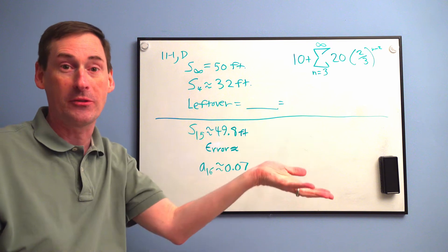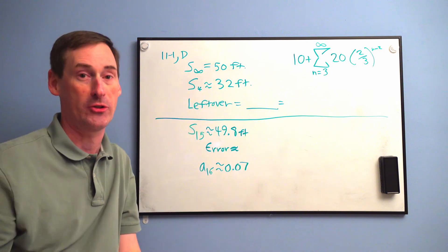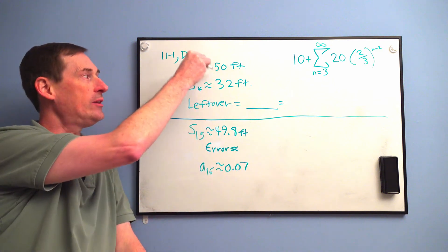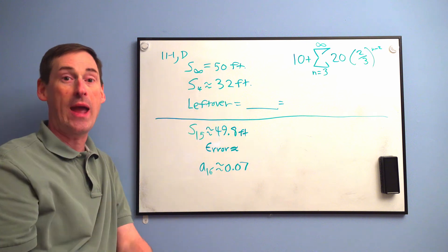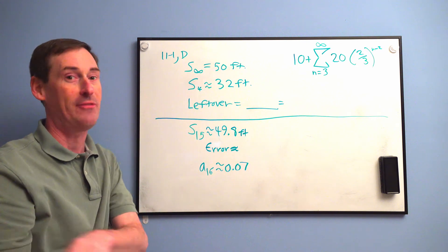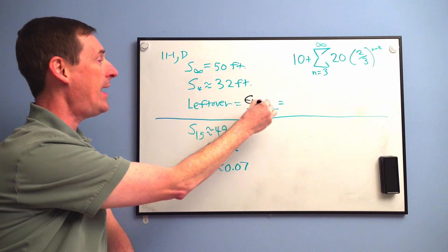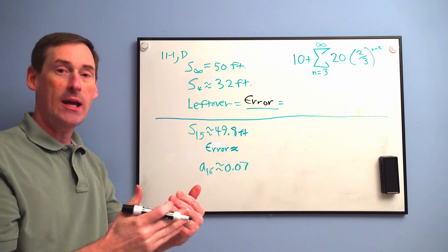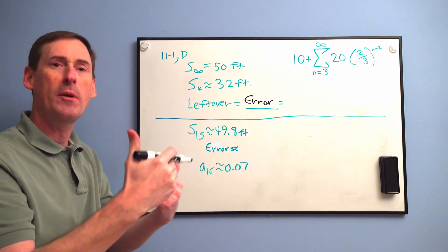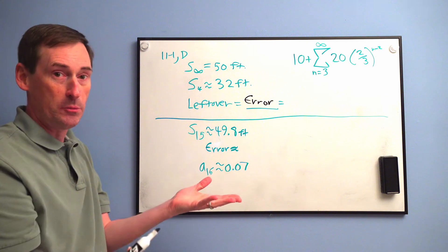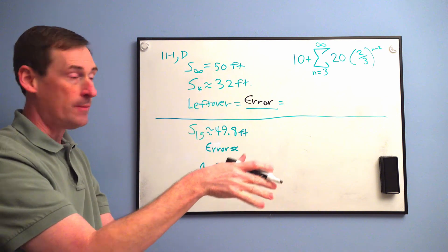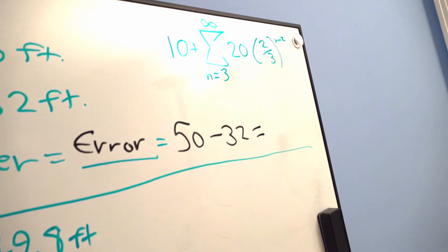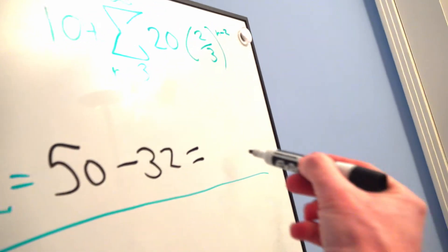You only let it bounce a couple of times — it's way far off from the answer. There are many more bounces to go. The leftover — wouldn't the leftover be 18 between those two? And there's a name in calculus for the leftover. In Calc 2, we call that the error. Not a mistake, not that kind of error, but kind of the leftover gap — how much is left to go. The error is very simple to calculate: the error of a partial sum is how far off from the real infinite sum you are. 50 minus 32 is 18 feet — that's your error right there.